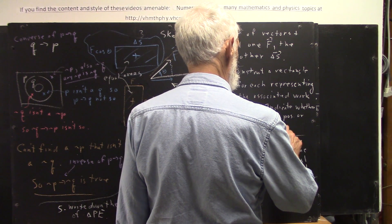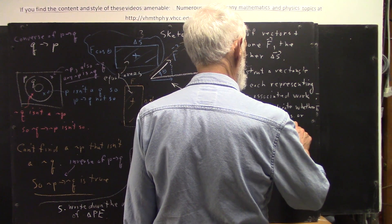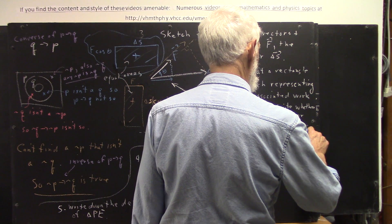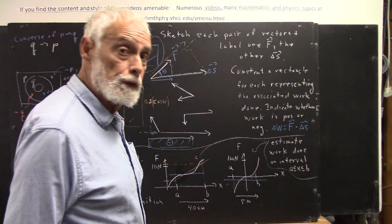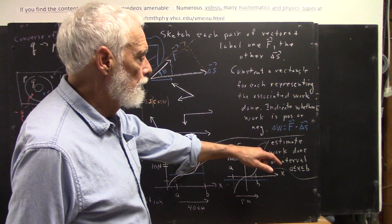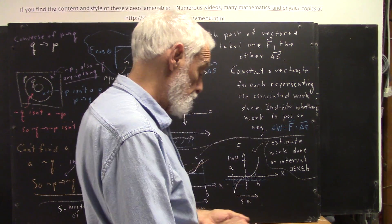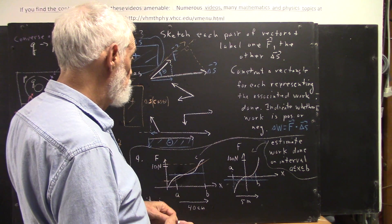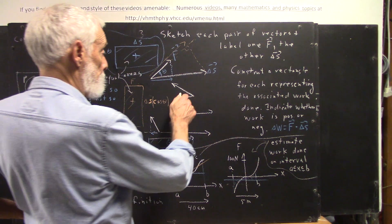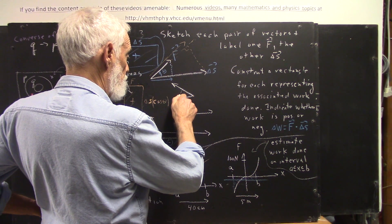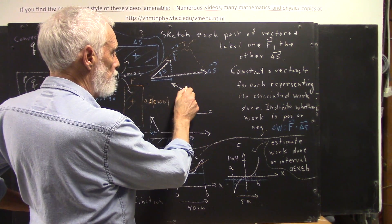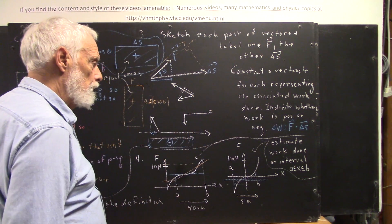First of all, you need to know that work — delta W — is the dot product of F and delta S. So how do we represent the dot product of two vectors as a rectangle? I'll illustrate with these two vectors. I project one vector onto the other at a right angle, and I get a vector projection.